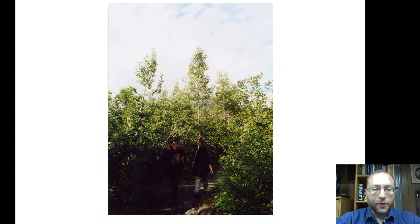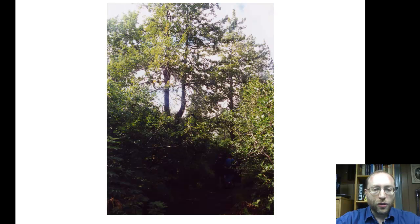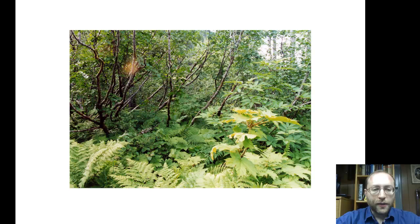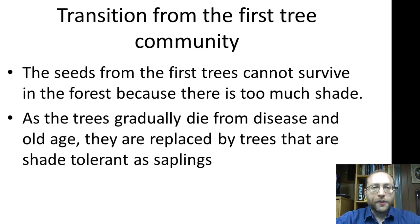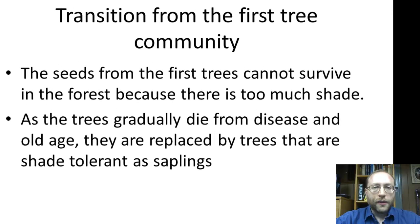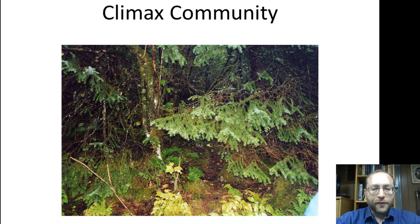As you go further away from the glacier, you see the trees get taller and taller, with a nice understory coming in too. As this community gets older, the new trees that come up — the next generation — can't be the first generation because those trees need a lot of sunlight, but there isn't enough. So the next generation trees that come up are the ones that can survive in that shade. That brings us to the second tree community, which is usually the last one: the climax community.